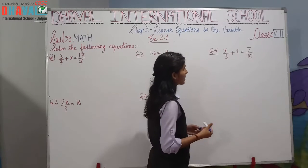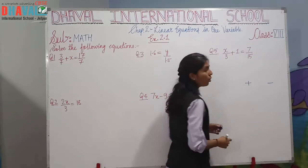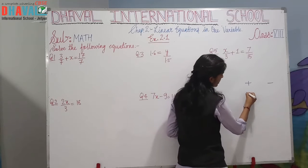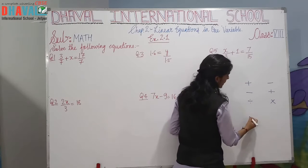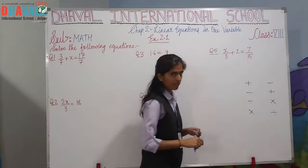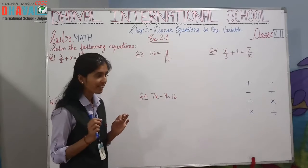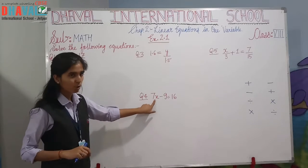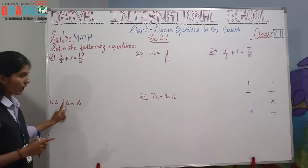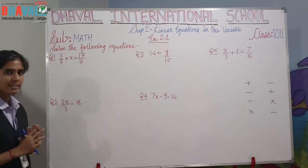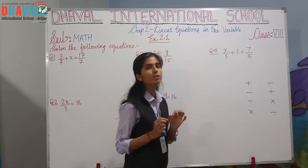The key property of an equation is balance — whatever operation you perform on one side, you must perform the same operation on the other side as well. So whether you add, subtract, multiply, or divide, both sides must be treated equally. For example, if we have 2x, we can multiply or divide both sides by the same number.